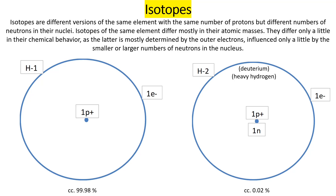The number of neutrons in isotope U235 is 235 minus 92, which equals 143 neutrons.